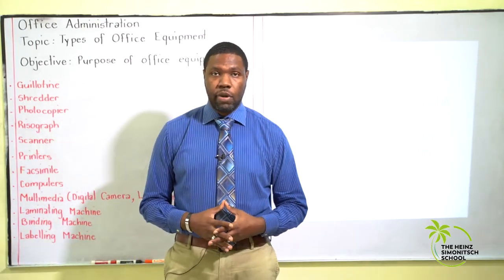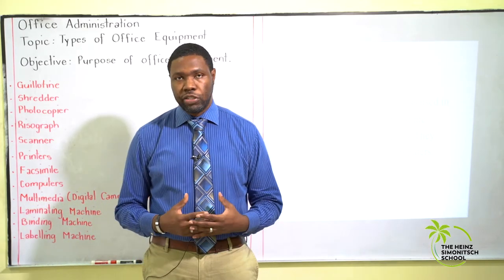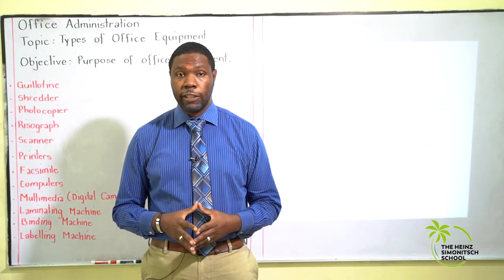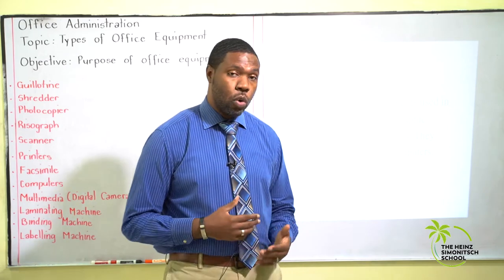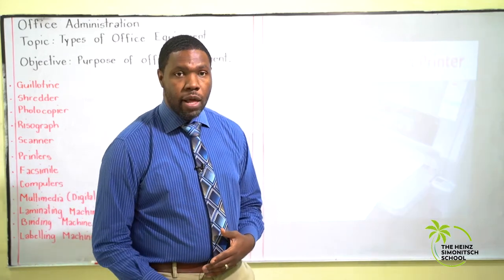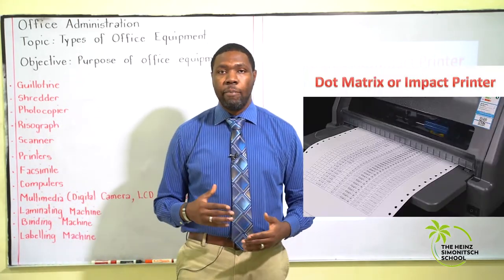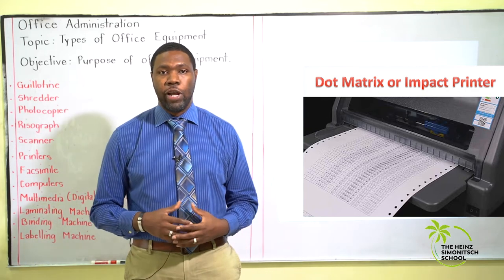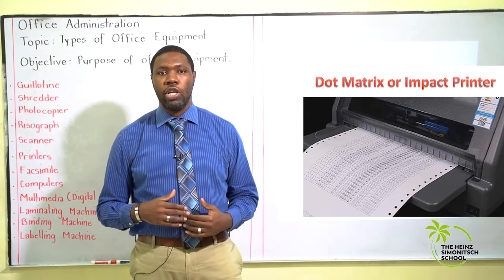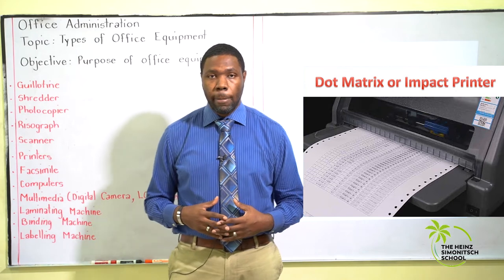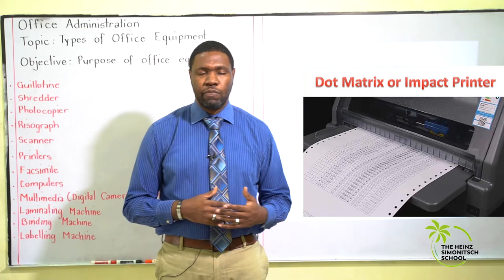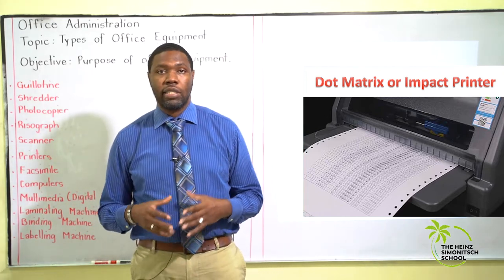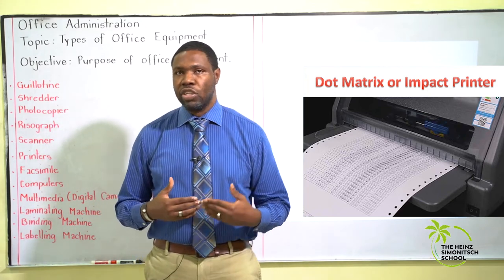Now we're going to be looking at printers. Printers are output devices used in the office to create text and graphic records relevant to the business, and they work in combination with a computer. The first type is the dot matrix or impact printer. Dot matrix printers generate poor quality documents cheaply and are typically used for printing data that does not need to be presented well — such as invoices — because it's inexpensive and high presentation quality is not required.